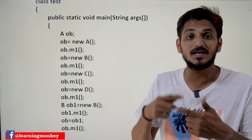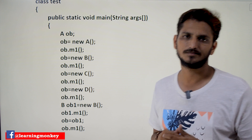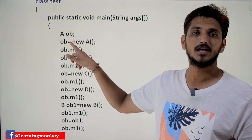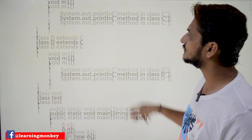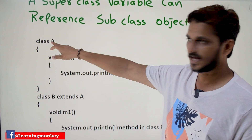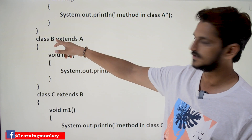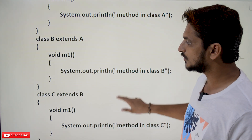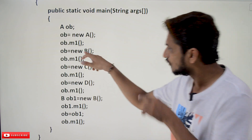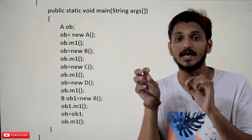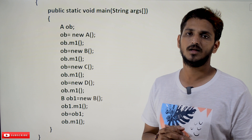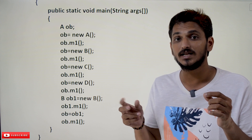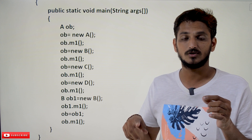Now consider OB = new B(). This creates an object for class B and assigns it to OB. OB belongs to class A — A is the superclass for all classes B, C, and D. This is what is meant by: a superclass variable can reference a subclass object. So now OB.M1() will call the M1 method present in class B.